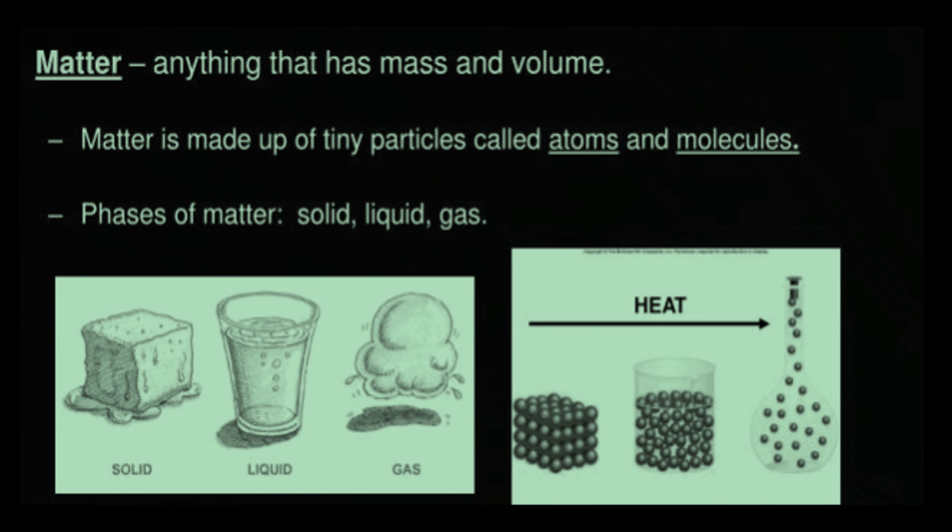Matter is anything that has mass and it occupies space. For example, if we take a duster, which is a very common thing seen in class. A duster is a solid object which has mass. Mass means it has weight, and it occupies volume — meaning it occupies certain space.